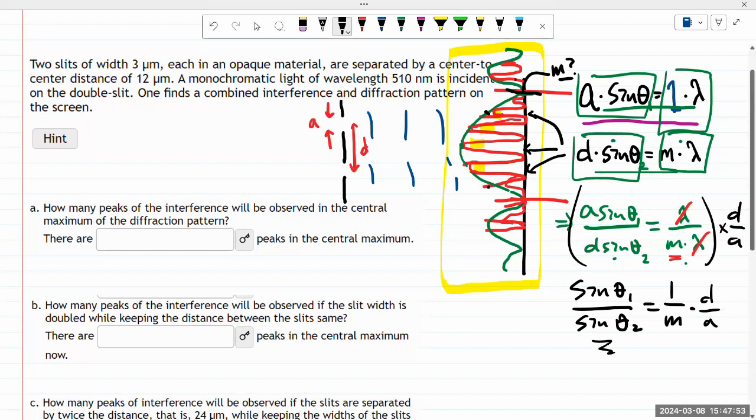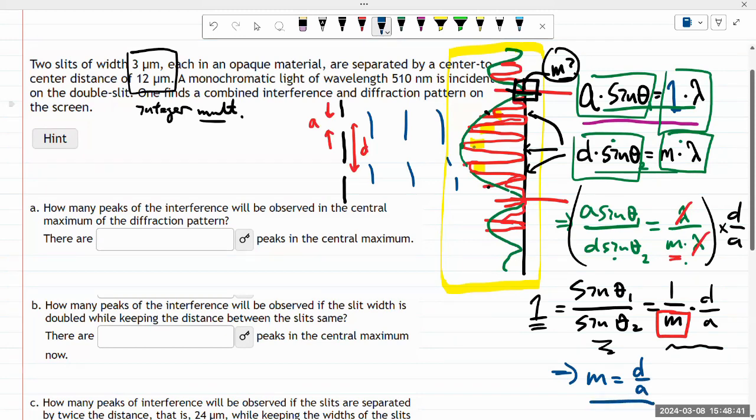In cases where you get this overlap, you have theta one equal to theta two. So this left hand side becomes one for the value of m that leads to overlap. Looking at this, they are integer multiples of each other, so I can guess they're actually going to overlap. That ratio is one, so I need some value of m that satisfies this equation. Multiplying both sides by m gets m equals d over a. Here d over a equals 4, so m equals 4 is where they overlap.